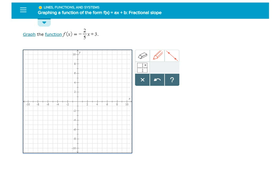This topic is graphing a function of the form f(x) equals ax plus b with a fractional slope. Now I'm going to do this twice. Once I'm going to do it on paper and pencil, and then I'm going to go over to Alex and show you how to do it on the computer.